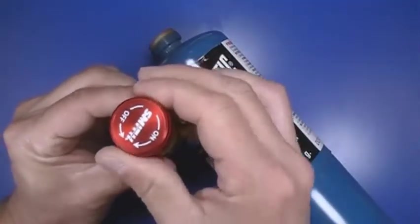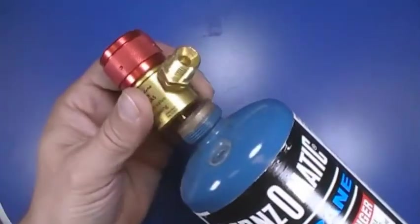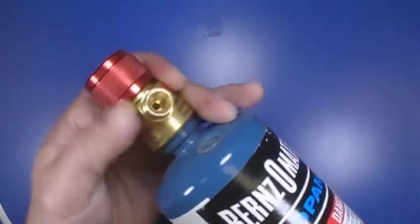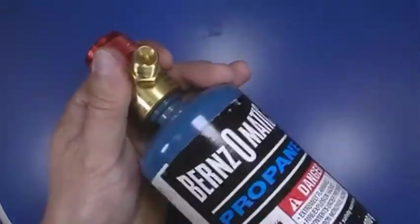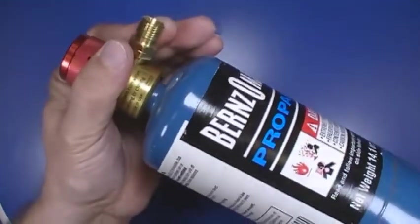With the regulator dial in the off position, attach the propane cylinder to the fuel regulator. Twist the propane cylinder clockwise to tightly secure it to the fuel regulator. Once in place, check around threaded connection for leaks.